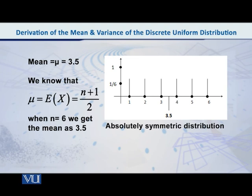Well, what is the formula? Mu is equal to n plus 1 over 2. If n is equal to 7, I'm sorry, if n is equal to 6, what do we get? 6 plus 1 over 2, 7 by 2.